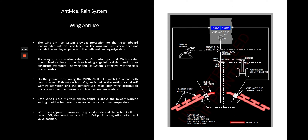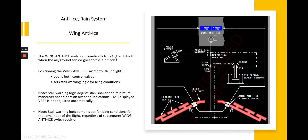On the ground, positioning the wind anti-ice switch to on opens both control valves if thrust on both engines is below the takeoff warning activation setting and the temperature inside both wind distribution ducts is less than the thermal switch activation temperature. Both valves close if either engine thrust is above the takeoff warning setting or either temperature sensor senses a duct over-temperature. With the air-ground sensor in ground mode and the wind anti-ice switch on, the switch remains in the on position regardless of control valve position. The wind anti-ice switch automatically trips off at liftoff when the air-ground sensor goes to air mode.